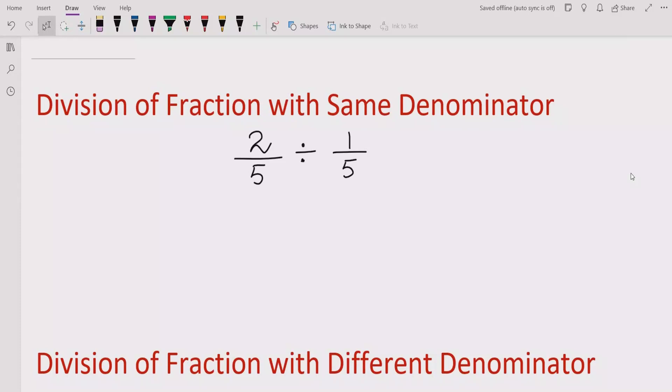So here we have two questions like 2 upon 5 divided by 1 upon 5. First fraction is 2 upon 5 and second fraction is 1 upon 5, and both have same denominator.